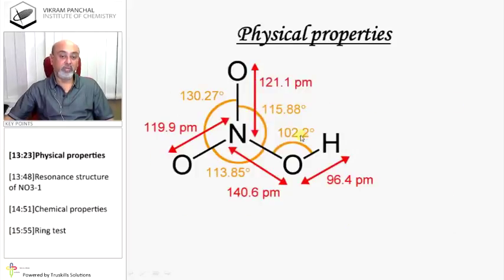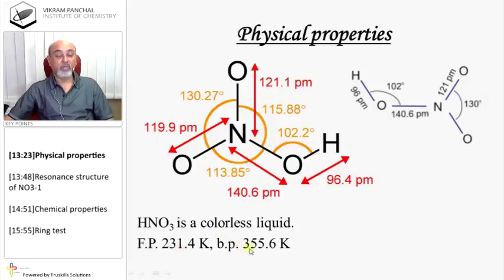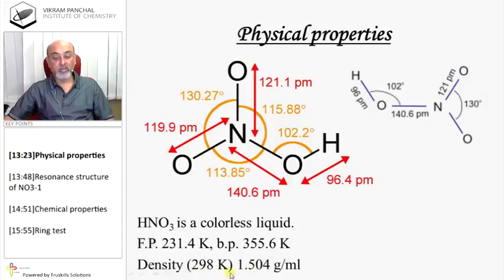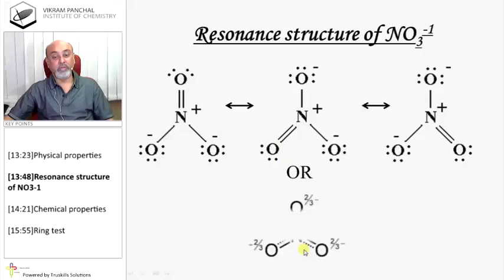Physical properties of HNO3: This is the shape and bond lengths and angles of HNO3. HNO3 is colorless liquid. Freezing point 231 Kelvin, boiling point 355 Kelvin, density at 298 Kelvin is 1.5 grams per milliliter. Resonance structure of HNO3: As HNO3 is acidic, it releases H+ ion and gives NO3- nitrate ion. As there are 3 oxygens, SP2 hybridized, therefore the negative charge shifts on different oxygens and we have 3 resonance structures of NO3-.